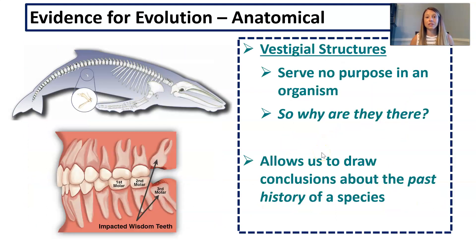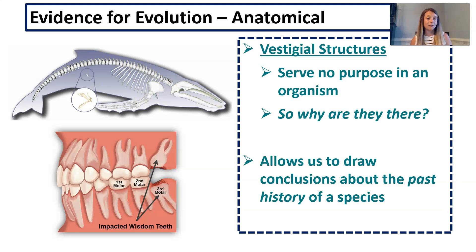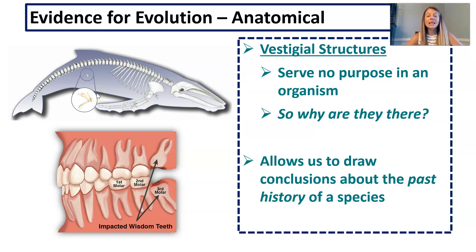Vestigial structures are structures that are leftover in an organism even though they serve no purpose, allowing us to draw conclusions about the past history of a species. For example, whales have hip bones — whales don't need hip bones; they swim and don't have legs. This suggests that whales must have evolved from something that did have legs and hips. Scientists think whales actually evolved from a land-dwelling mammal. Look up wisdom teeth to find out the story of those vestigial structures.